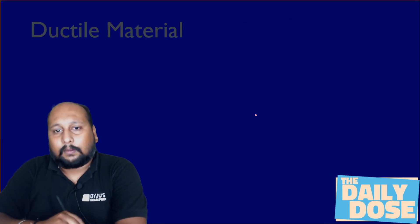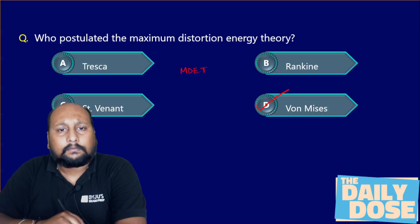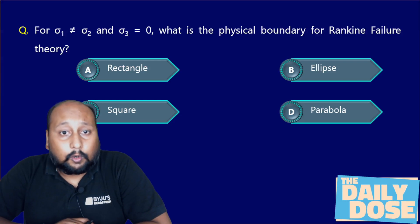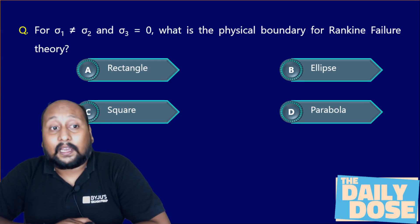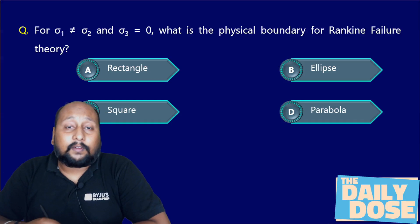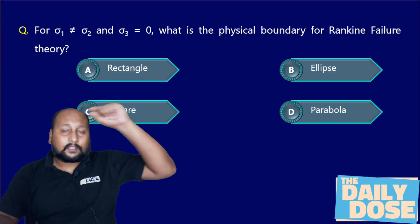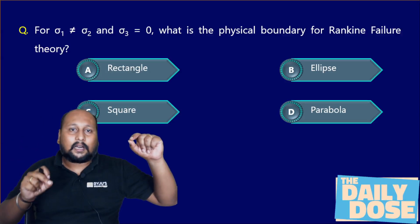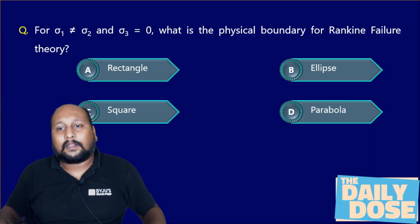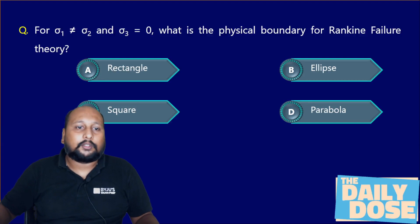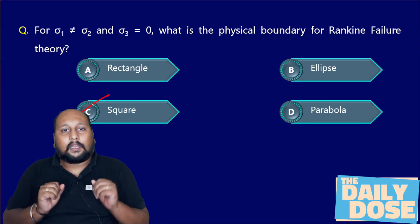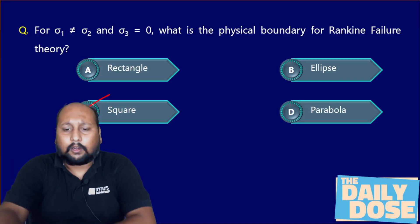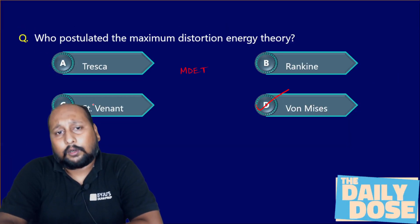Let us take one more problem. For sigma 1 not equal to sigma 2, and sigma 3 equal to 0, what is the physical boundary for Rankine failure theory? Remember, when we talk about Rankine failure, it is the first row in the table. Using SHEER — S-H-E-E-R — Rankine theory deals with a square shape. So option C is the correct answer. By this way you will be able to answer any question coming from the theories of failure very easily.